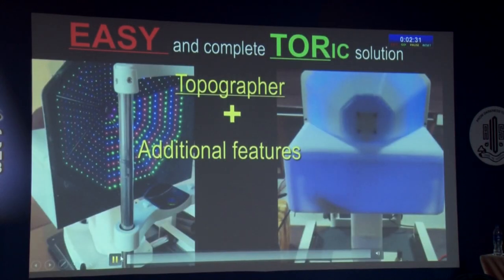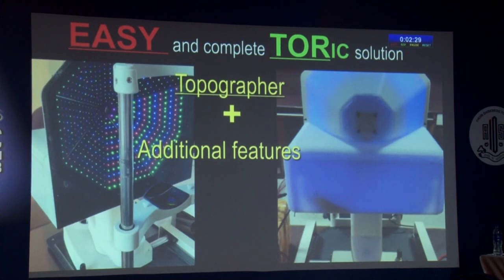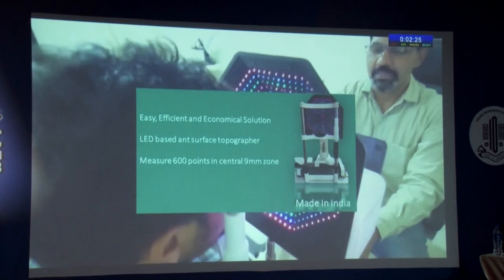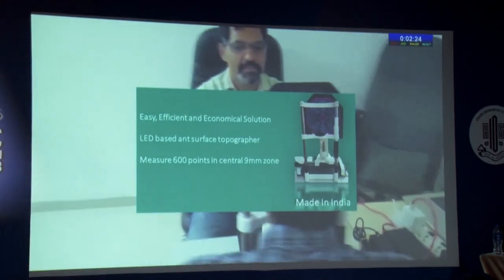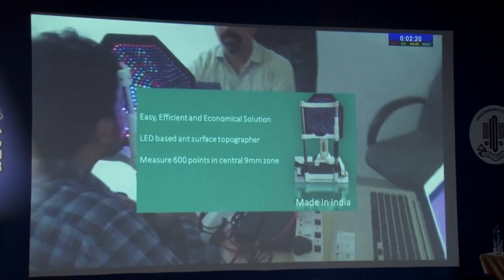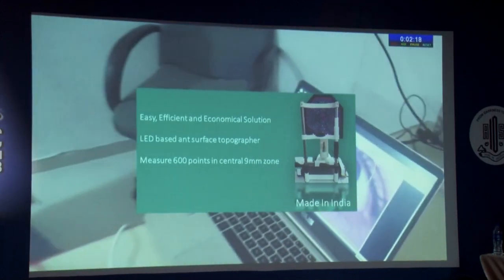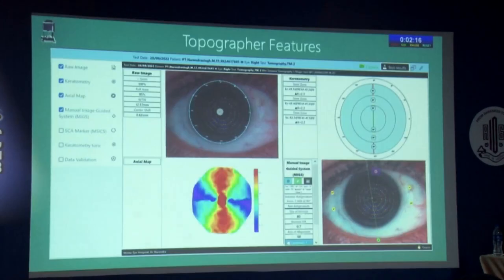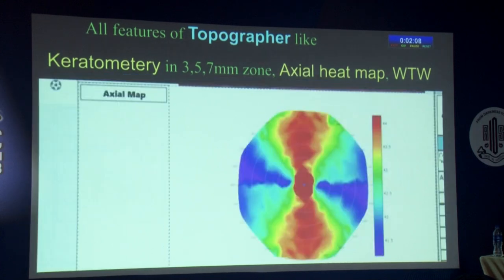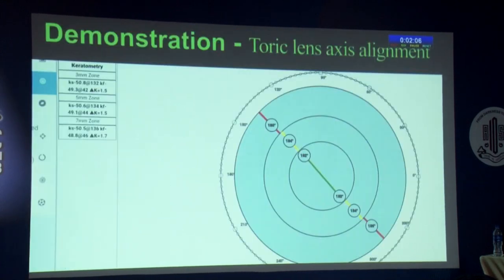It is a topographer with many additional features. It provides an easy, efficient, and economical alternative to existing solutions. It is an LED-based anterior surface topographer which analyzes 600 data points in a 9 mm central corneal zone. A single capture provides all the required data summarized on a single screen. It provides keratometry in 3, 5, and 7 mm zones, axial heatmap, white-to-white, etc. Demonstration of toric lens axis alignment follows.